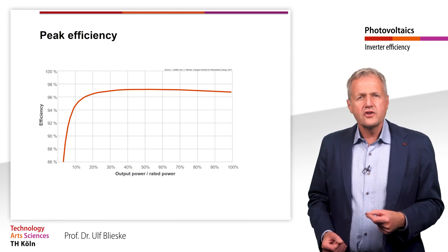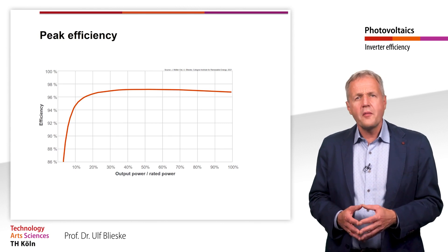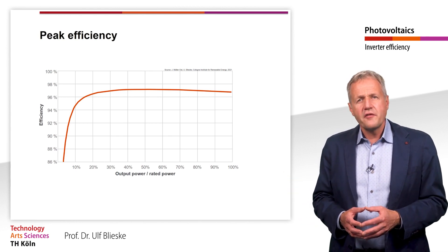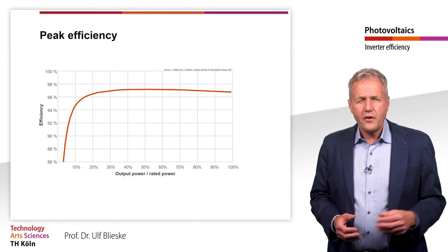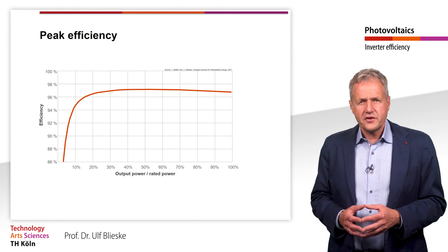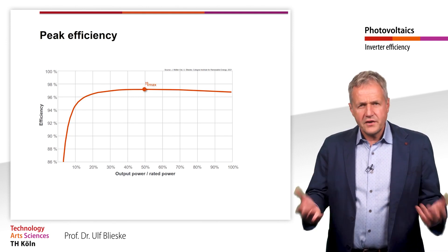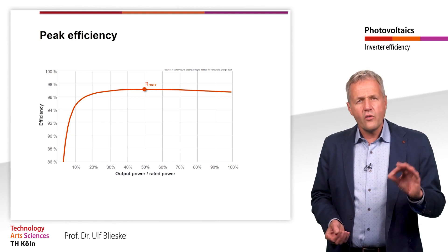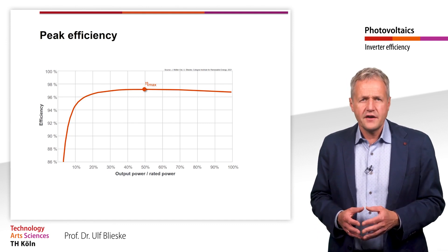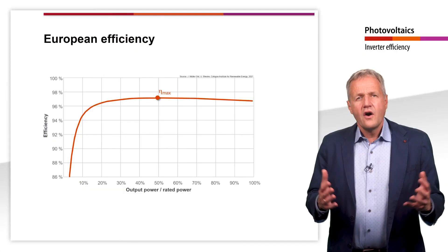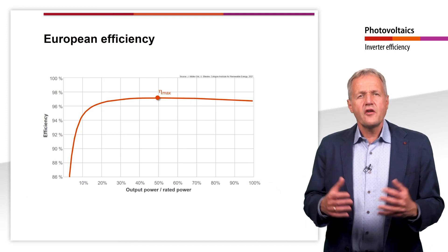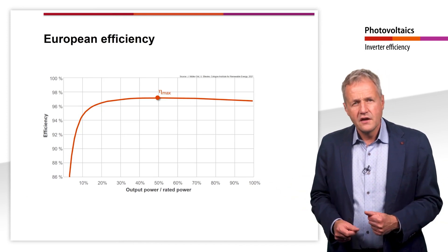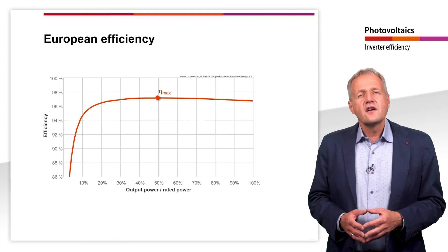Good single-phase transformerless inverters today achieve maximum efficiencies of about 97%. For three-phase devices the efficiency is even about 1 to 1.5% higher. However, peak efficiency is of limited use when comparing inverters.